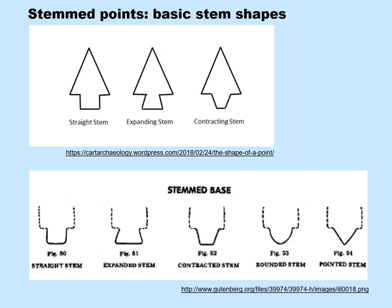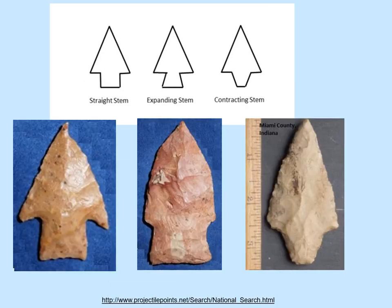Stemmed points have three basic stem shapes: straight stem, expanding stem, and contracting stem. Although as you can see in the bottom illustration, you may also distinguish rounded stems and pointed stems. A straight stem has sides that are more or less parallel. In an expanding stem point, the base of the stem is wider than the top near the shoulders. In a contracting stem point, the base is smaller than the top where it is near the shoulders.